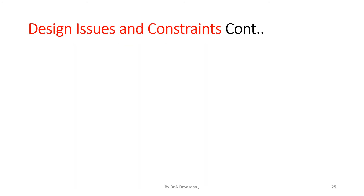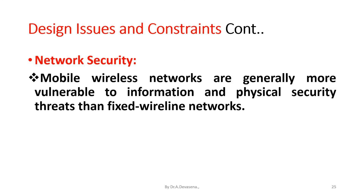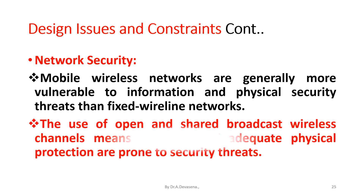The next constraint is network security. Mobile wireless networks are generally more vulnerable to information and physical security threats than fixed wireline networks. The use of open and shared broadcast wireless channels means nodes with inadequate physical protection are prone to security threats.